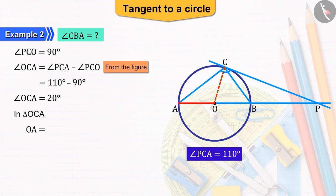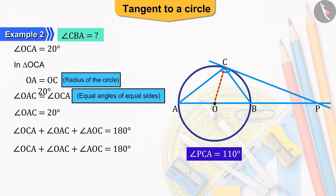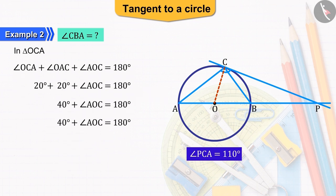Now, in triangle OCA, the sides OA and OC are equal being the radii of the circle. So, angle OAC and angle OCA will also be equal. We know that the sum of the three angles of a triangle is 180 degrees.